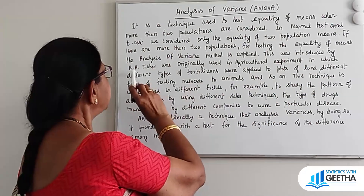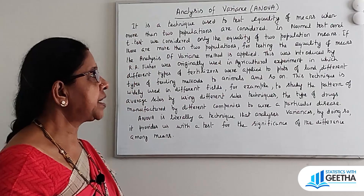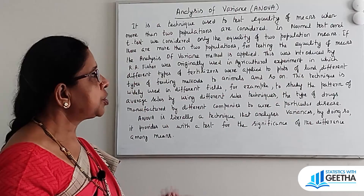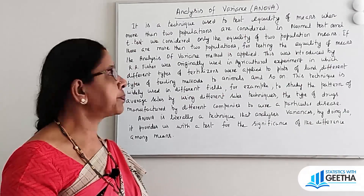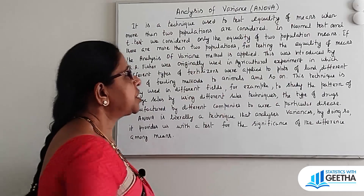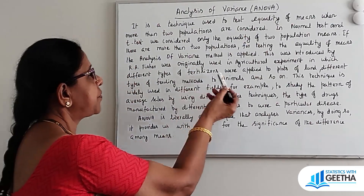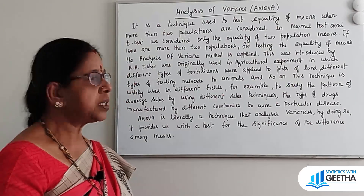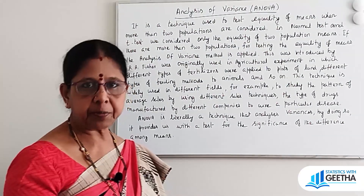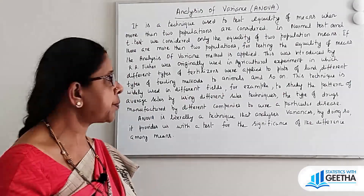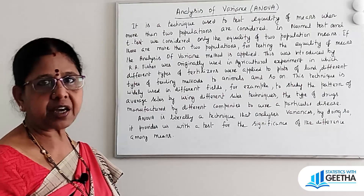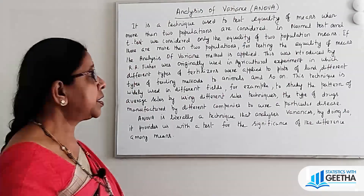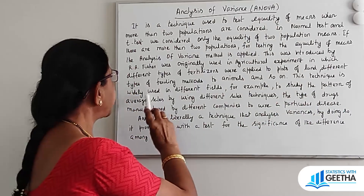ANOVA was introduced first by R.A. Fisher. It was originally used in agricultural experiments in which different types of fertilizers were applied to plots of land, and different types of feeding methods were applied to animals. In this way, agricultural experiments used this ANOVA technique.